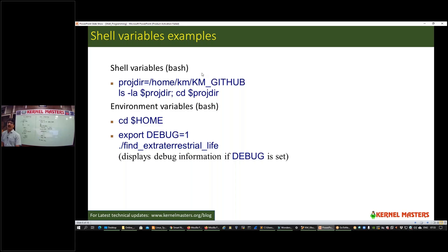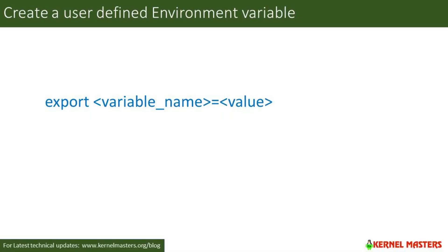For example, GitHub is a folder under km, and km is under home — so the whole path is called a project directory. With an environment variable, you can store and display the whole path. You can see the variable name preceded by a dollar sign to print the value of the variable. Using the cd command, you can go to your project folder immediately wherever you want.